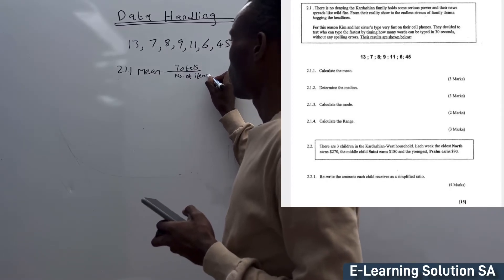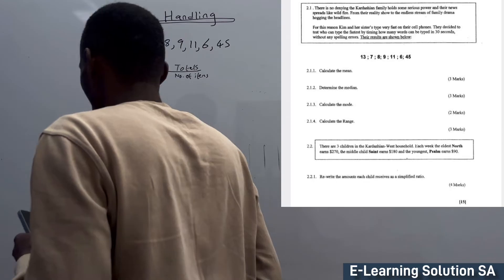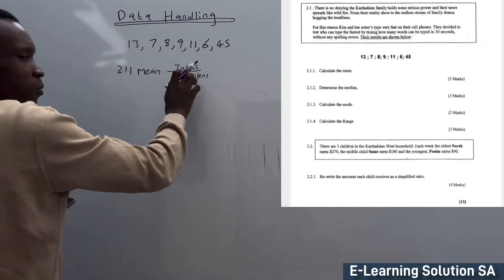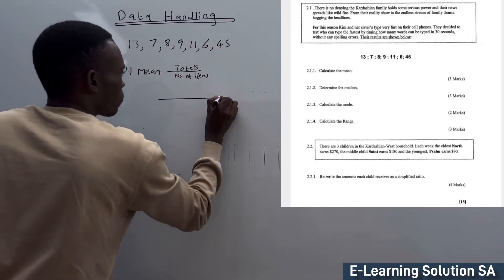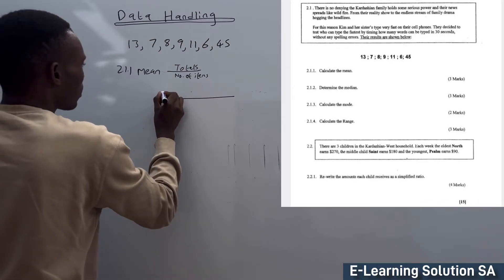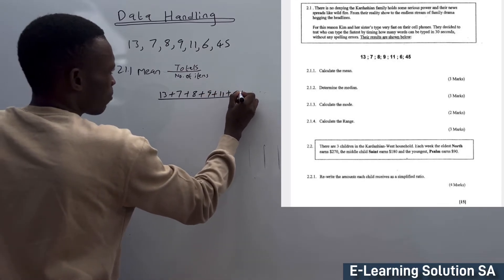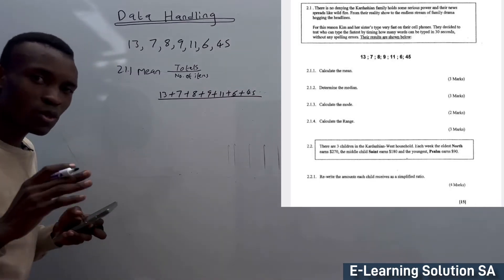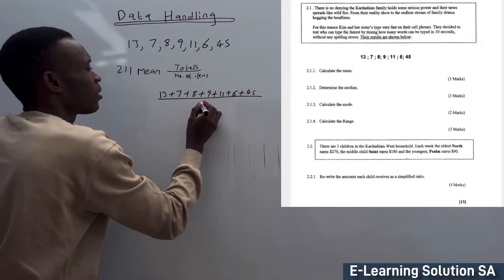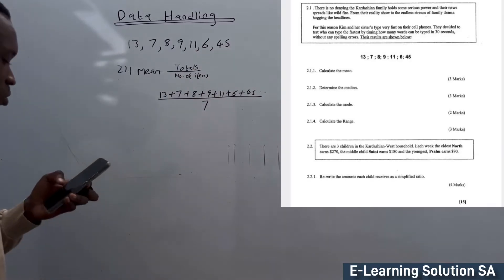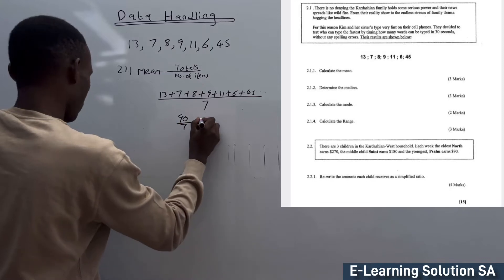To do this average, we add all the numbers that we have and divide by how many units. Let me write it: 13 plus 7 plus 8 plus 9 plus 11 plus 6 plus 45. Count them: 1, 2, 3, 4, 5, 6, 7. If you add all this, it gives you 99 divided by 7.